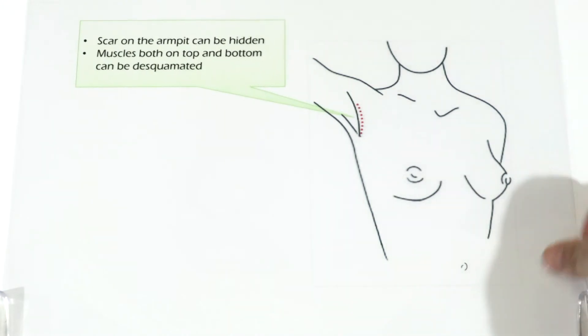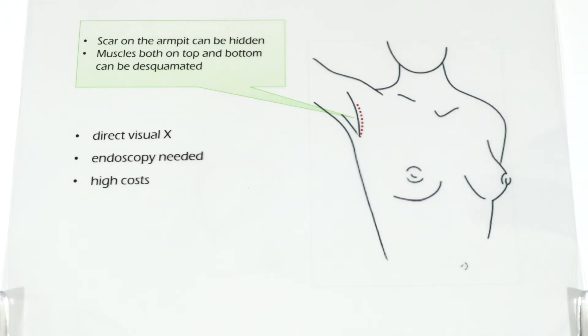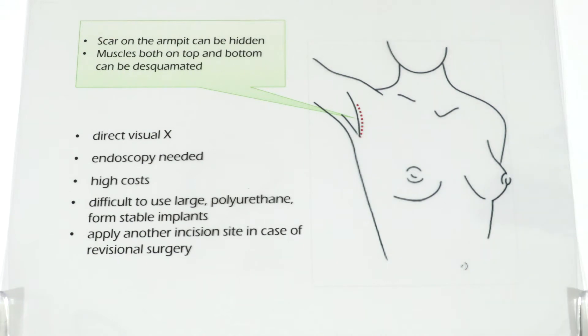The scar on the armpit can be hidden when conducting the axillary incision and the muscles both on top and bottom can be disconnected. But there is no direct visual. Therefore, the surgeon needs to use the endoscope which leads to high costs. Also, it is difficult to use large polyurethane foam stable implants. If you need a secondary surgery for correction, we might have to apply another incision on other spots.